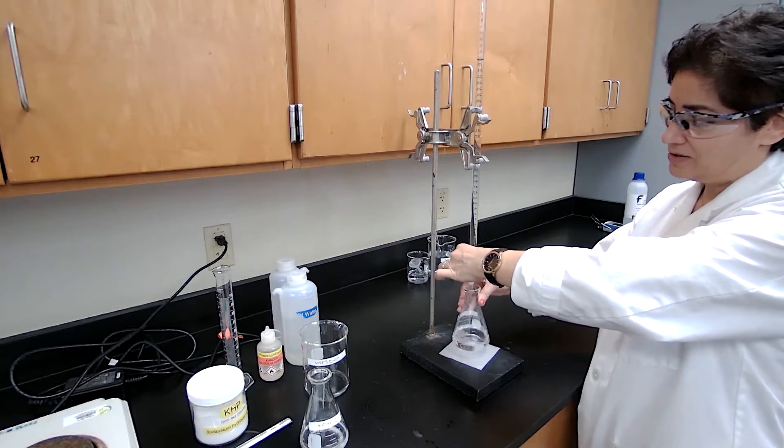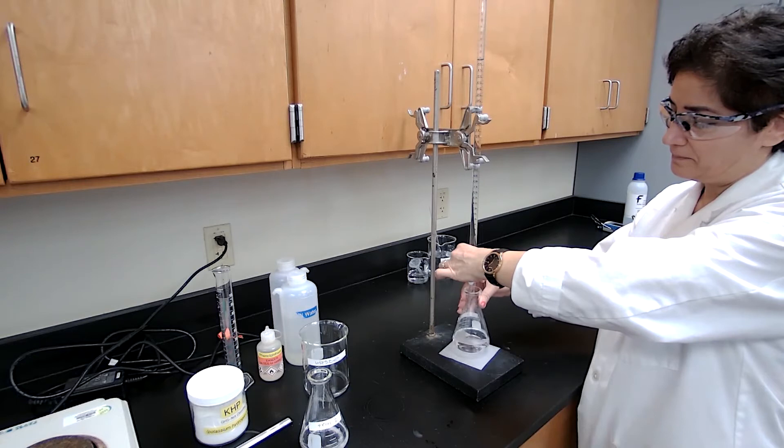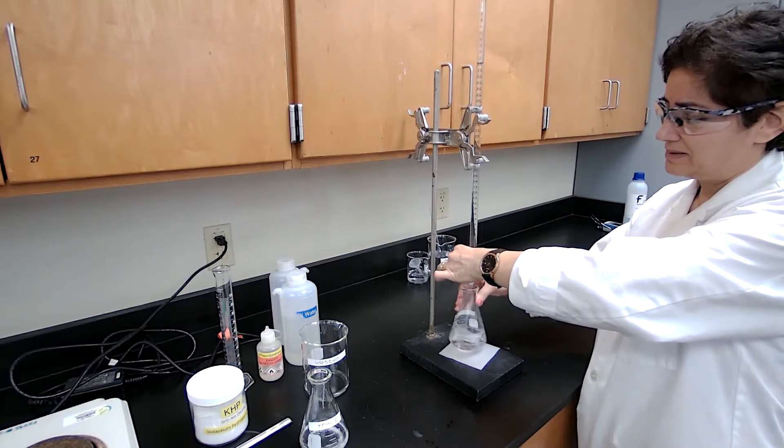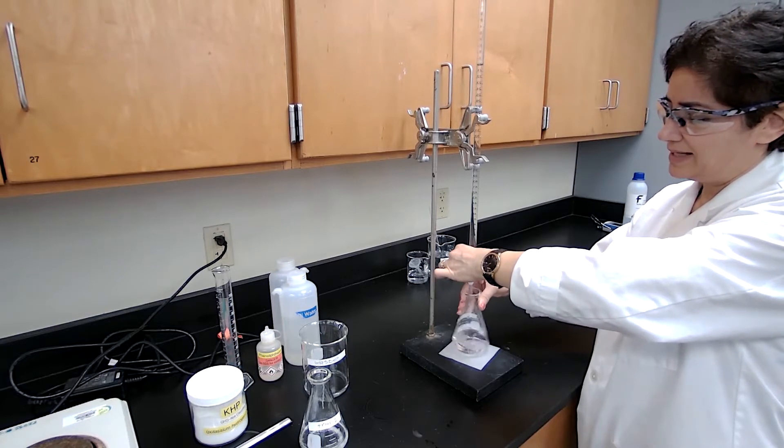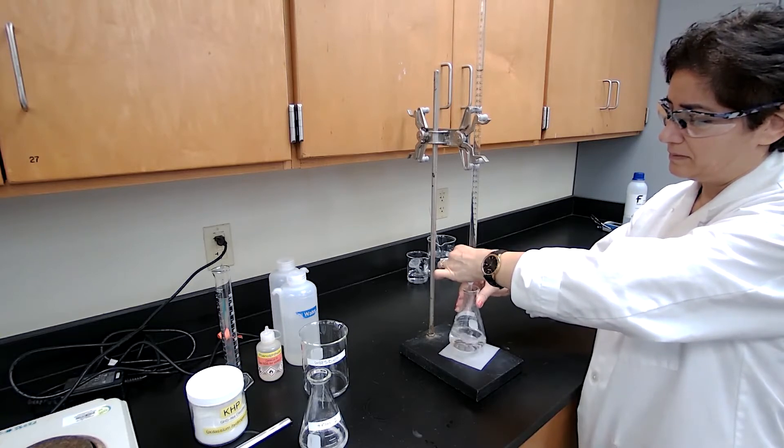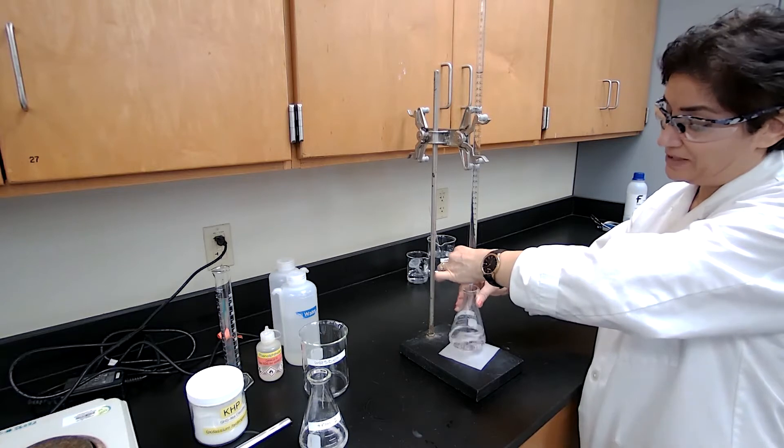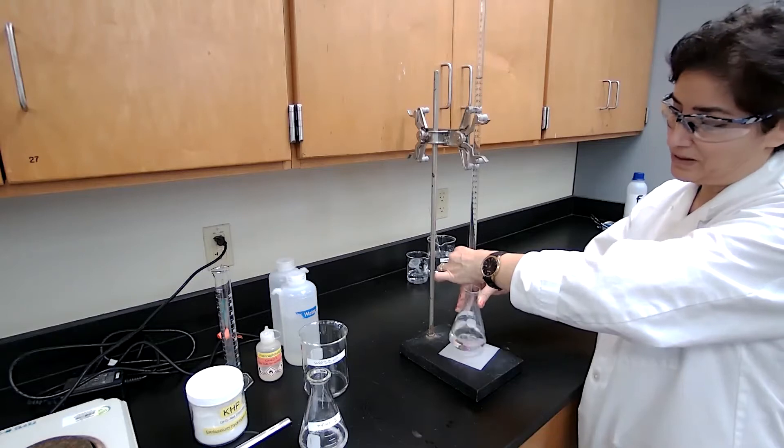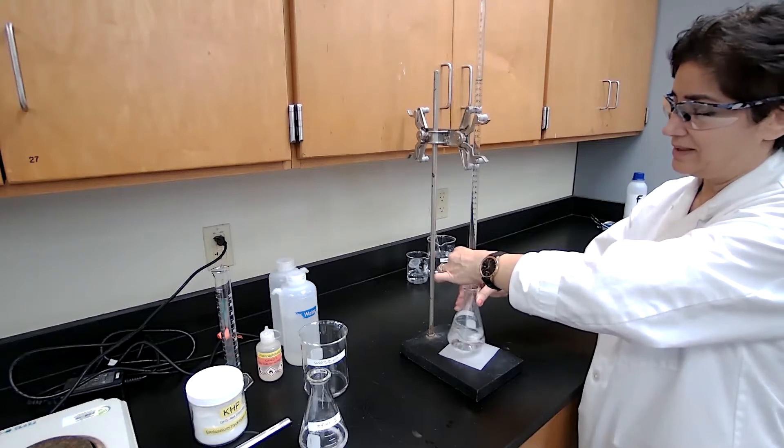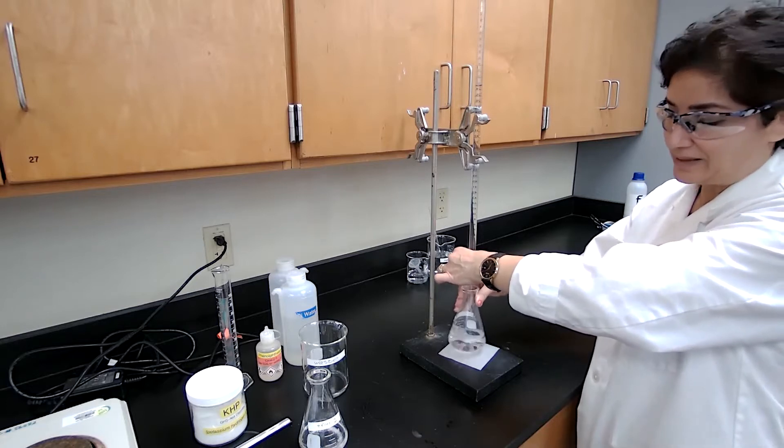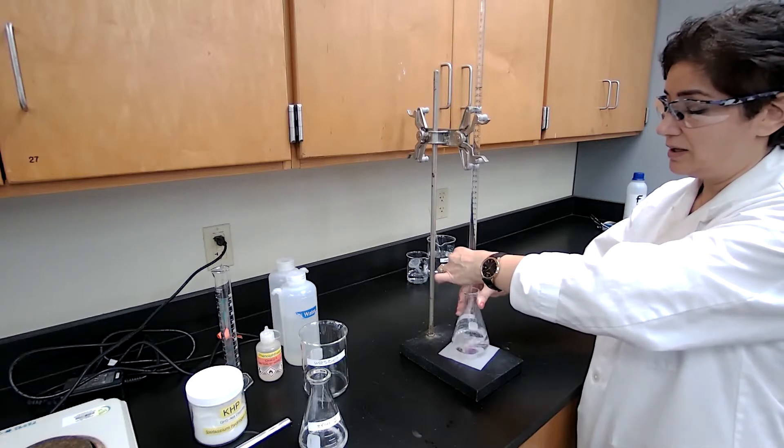So I try to add slowly, one drop at a time. The color disappears still, so I continue adding. You have to be patient. Sometimes you are not patient with this. When you add too much, you get too dark of a pink color. You don't know that it happened with which drop. You have to repeat the experiment, which is okay. That's why we have the optional third trial.